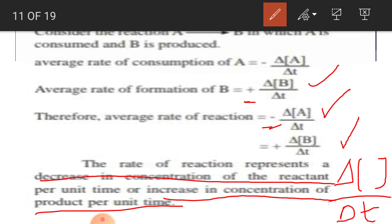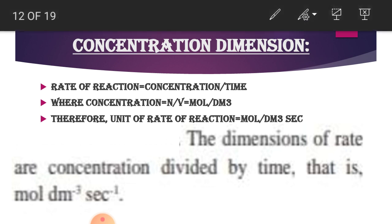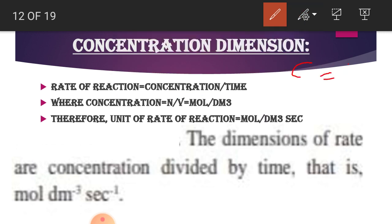Fine, let's move forward. The rate of reaction represents a decrease in concentration of the reactant per unit time, or increase in concentration of product per unit time. Now let's see the concentration dimension. The rate of the reaction is equal to concentration upon time, that is delta C upon delta T - the concentration of the reactant or product upon delta T - where concentration C = N/V. N is the number of moles and V is the volume.